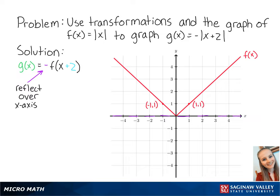So our new points are going to be at (1, -1) and (-1, -1). Connecting the points, we get the graph of negative f(x).